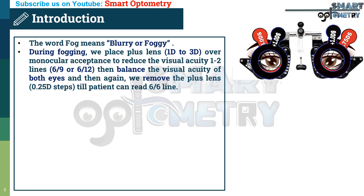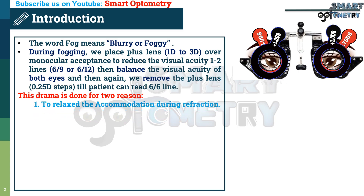Why such a complex process during refraction — placing plus power, then balancing visual acuity in both eyes, then reducing the power until the patient can read the 6/6 line? This is done for two reasons: one, to relax accommodation during refraction; and two, to keep accommodation balanced in both eyes after refraction.